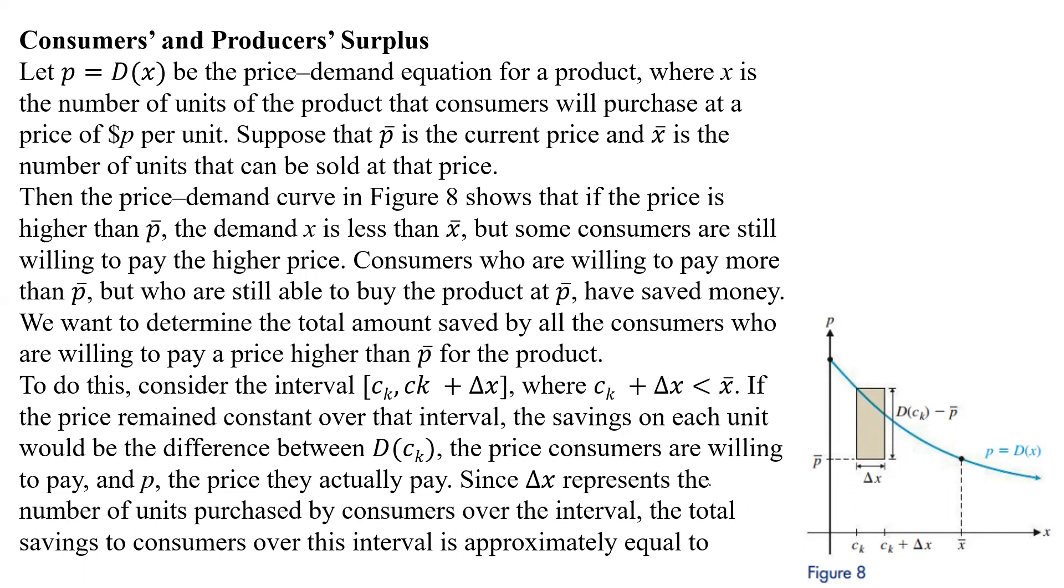To do this, we're going to consider this interval from CK to CK plus delta X, where CK plus delta X is less than or equal to X bar. Now if the price remained constant over this interval, the savings on each unit would be the difference between D of CK, the price consumers are willing to pay, and P, the price they actually pay.